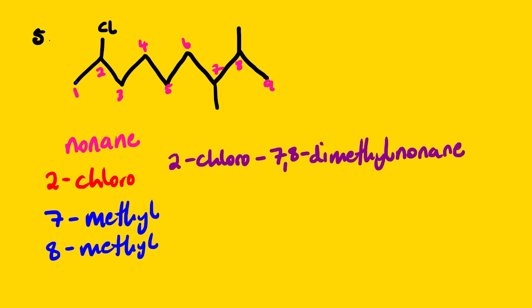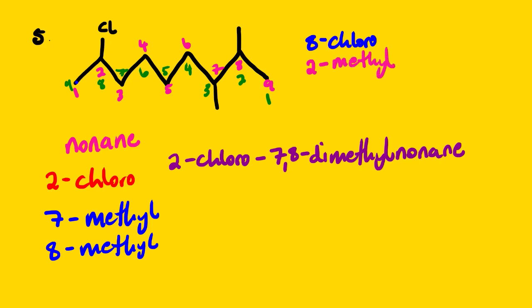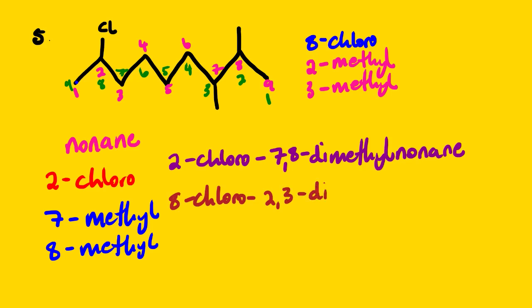Let us now count from the other direction: 1, 2, 3, 4, 5, 6, 7, 8, 9. Carbon number 8 we have our chloro, carbon number 2 we have our methyl, and carbon number 3 we have another methyl. So looking at the name from this direction, we have 8-chloro-2,3-dimethylnonane. Now comparing the two directions, this direction gives lower numbers.